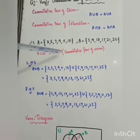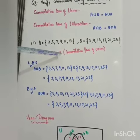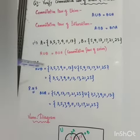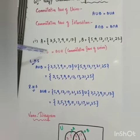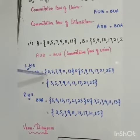We will find A union B and B union A. If they prove to be the same, then we will draw Venn diagram. Okay, left hand side: A union B. First write set A union set B.